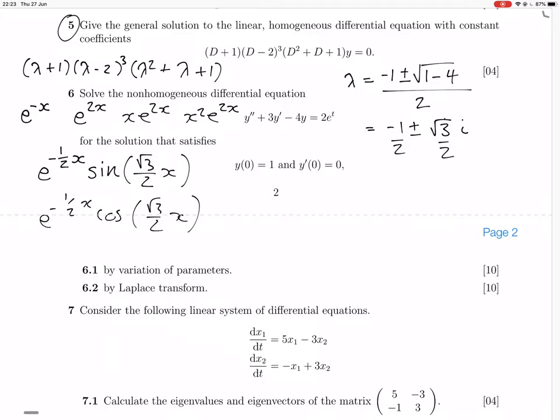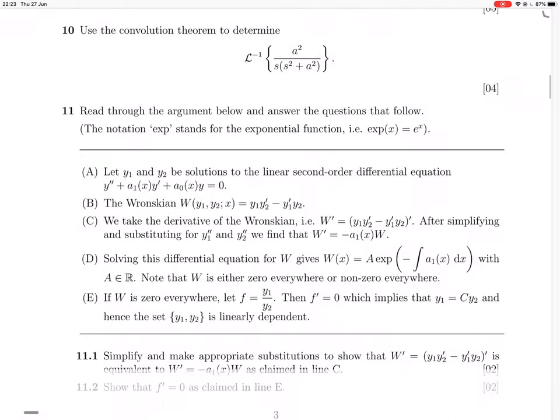So the first one, e to the minus x, that might be okay to check. So e to the minus x. So if we have d plus 1, d minus 2. You know what? I'll check it. I'll check it below.